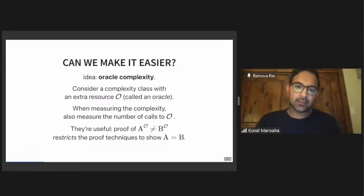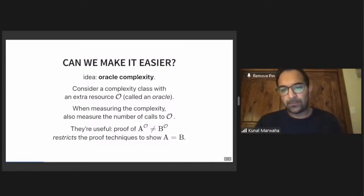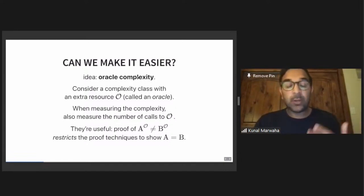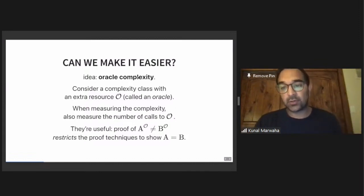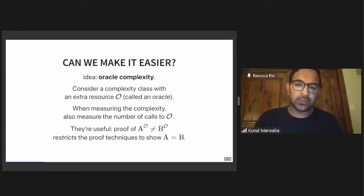We use this idea of oracles. You can consider a complexity class with access to an extra resource O — we'll call it an oracle. When we're measuring the complexity, we'll also measure the number of calls to O. For example, a polynomial time machine might also allow a polynomial number of accesses to this oracle O. The reason they're useful is because proving that two complexity classes are different with access to this oracle restricts the kinds of proof techniques you can use to show that two classes are equal in real life.